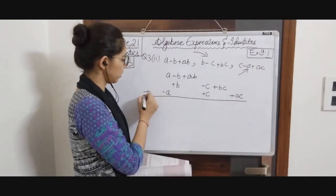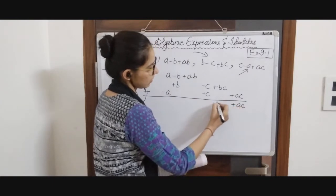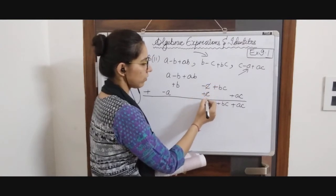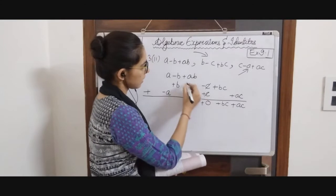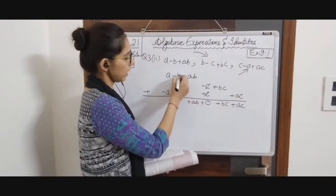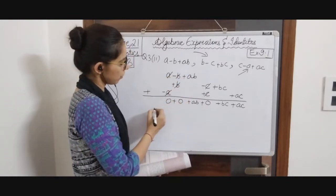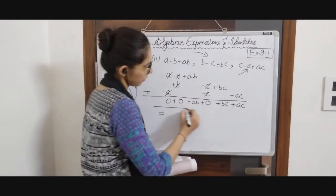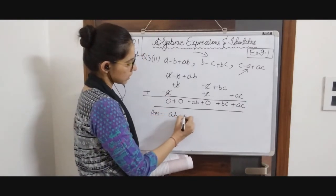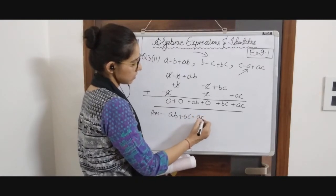Now we are going to add. AC is single, so we write it as it is. Similarly BC. Then minus C plus C — they cancel out and we get 0. Plus AB is single. Then minus B and plus B — they cancel out again, giving 0. Similarly A gives 0. So we are left with AB plus BC plus CA. CA and AC are the same thing.